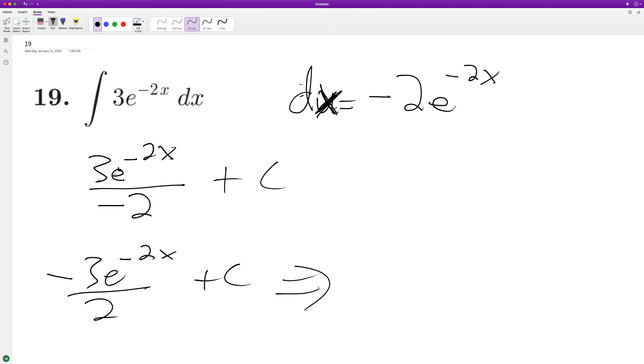We can test the derivative. So we get negative 3e raised to negative 2x over 2. Pull this down. The derivative of negative 2x is just negative 2. These cancel out. This becomes a positive 3, and that's how we end up with our 3e raised to negative 2x.